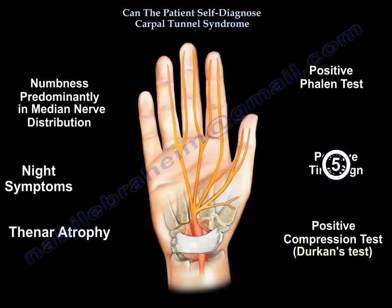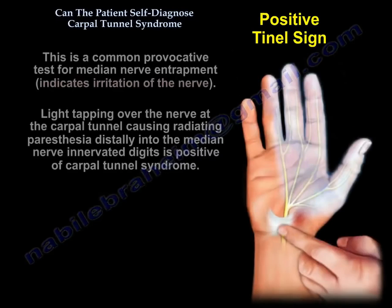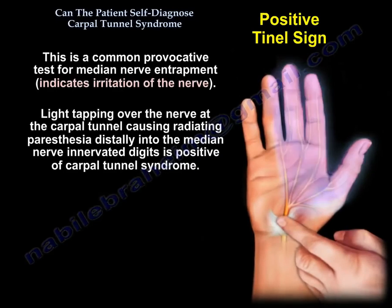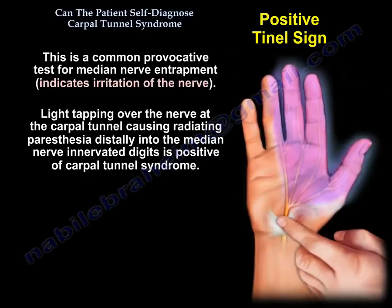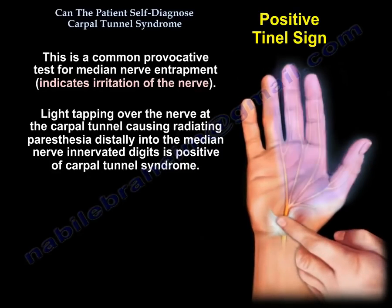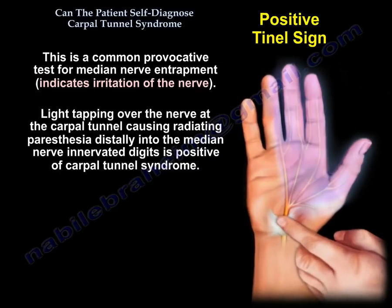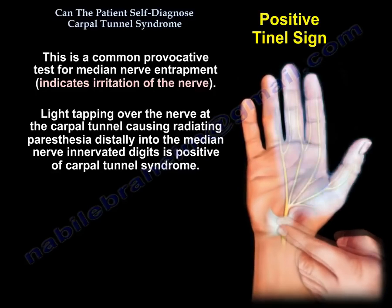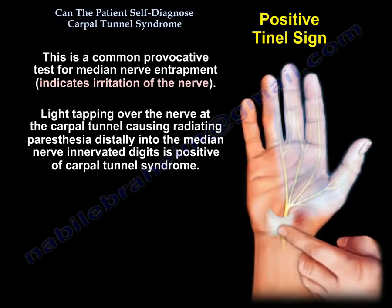The Tinel sign is a common provocative test for the nerves. A positive Tinel sign means irritation of the nerve. Light tapping over the nerve at the carpal tunnel will cause radiating paresthesia distally into the median nerve-innervated digits, meaning the test is positive for Carpal Tunnel Syndrome.